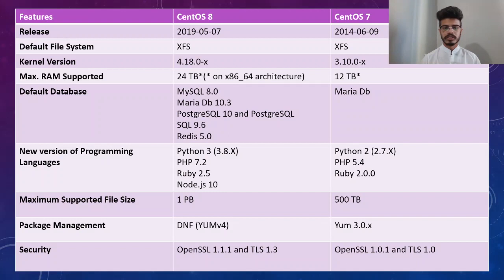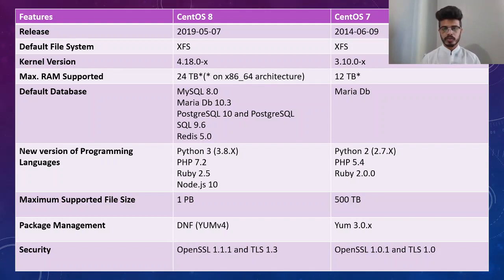New versions of programming languages are included in CentOS 8: Python 3, PHP 7, Ruby 2.5, and Node.js 10. Previously in CentOS 7, it was Python 2, PHP 5, and Ruby 2.